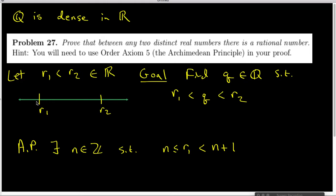This tells me that N is over here on the number line, and N plus 1 is somewhere over here, but I don't know N plus 1's relationship with R2. I also want to remind myself that this space might drop to zero — in other words, N and R1 may be equal to each other.